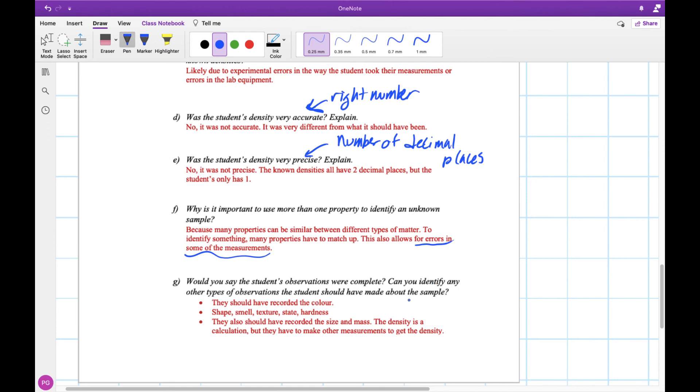And were the observations complete? Could we have any other ideas about it? There's lots of other things we could have recorded. Lots of other physical characteristics, like the color, shape, smell, texture, state, hardness. These are all things that we talked about last time, different types of physical characteristics. We could have recorded the size and mass, but they just told us the density. So we don't know exactly how they got that. But they definitely could have recorded those observations to make them more complete.